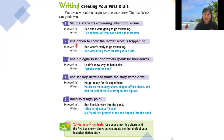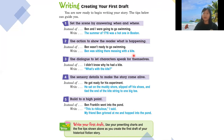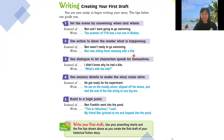Tip two: use action to show the reader what is happening. The old saying goes 'don't tell, but show.' So instead of saying 'he was late for school,' you can say 'he woke up late' — showing the action rather than just stating it.